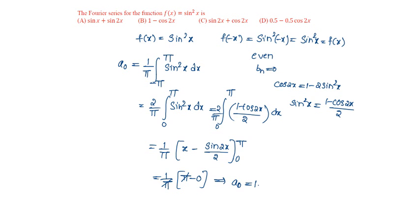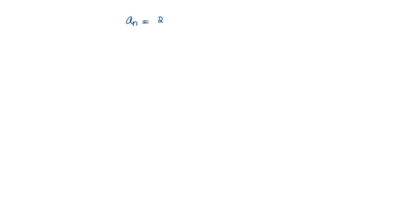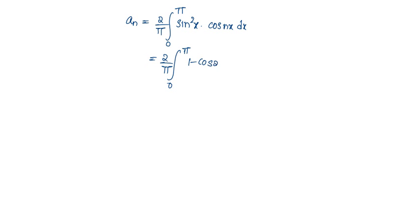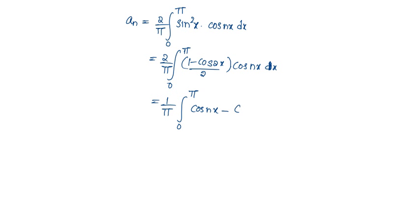Then aₙ will be equal to (2/π) integral from 0 to π of sin²x · cosnx dx, which equals (2/π) integral from 0 to π of (1 - cos2x)/2 · cosnx dx. The 2s cancel, giving (1/π) integral from 0 to π of (cosnx - cos2x · cosnx) dx.